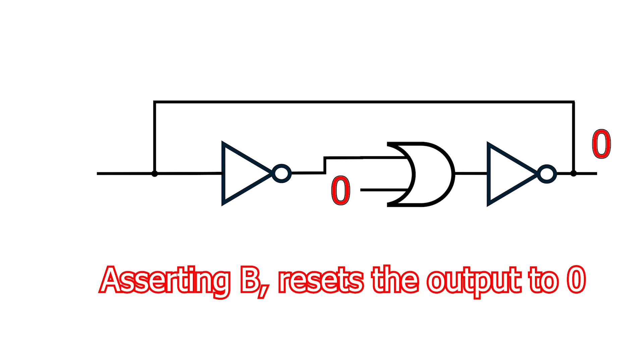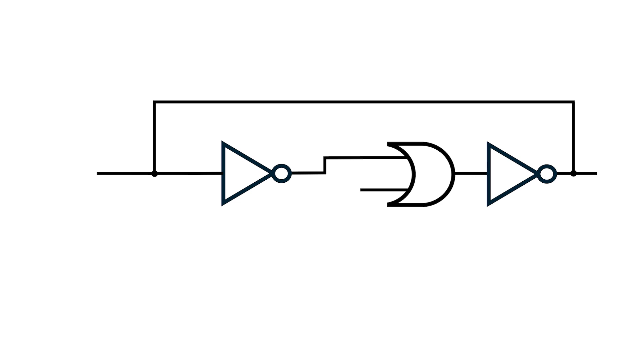No matter the state, asserting B resets the output to zero. Thus we call this B input reset.